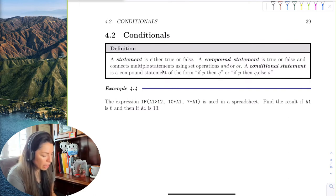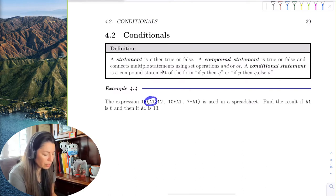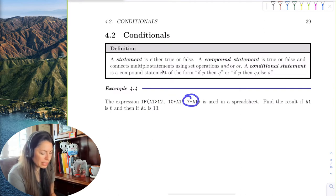We say like if the cell A1 is greater than 12, then multiply that by 10. And if it's not, then multiply it by 7.